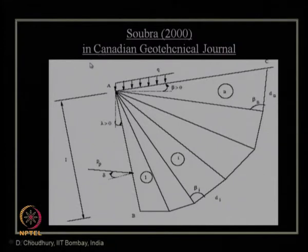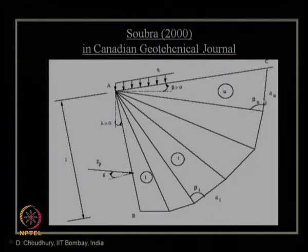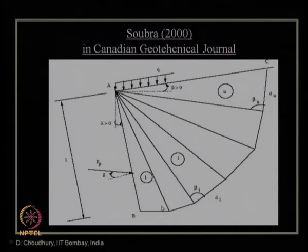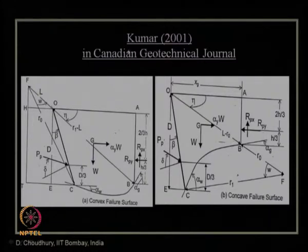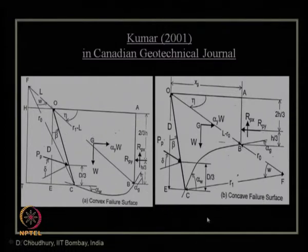Sobra in 2000, also published in Canadian Geotechnical Journal, found seismic passive earth pressure coefficient for a rigid retaining wall using piecewise linear curvilinear failure surfaces (triangular wedges) — increasing the number of wedges gives a more curvilinear surface. Kumar in 2001, also in Canadian Geotechnical Journal, estimated seismic passive earth pressure based on both convex and concave failure surfaces, corresponding to positive and negative wall friction angle cases.